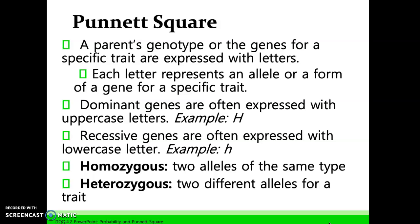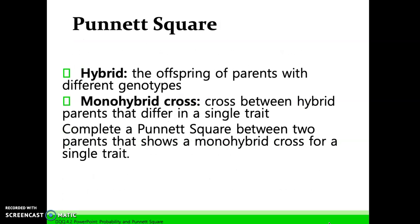As a reminder, homozygous means the animal has two alleles of the same type; heterozygous means they have two different alleles for the trait. A hybrid is the offspring of a parent with different genotypes. A monohybrid cross is a cross between hybrid parents that differ in a single trait.